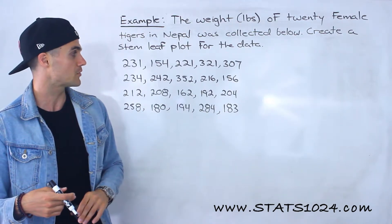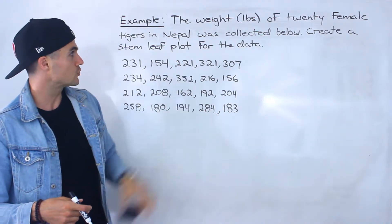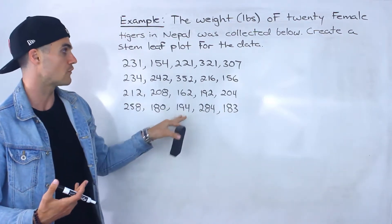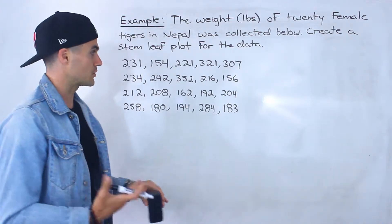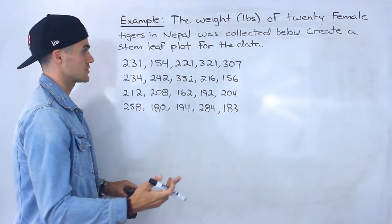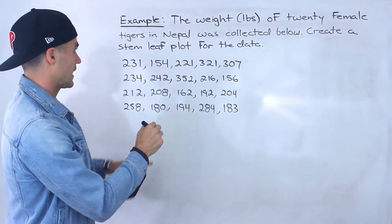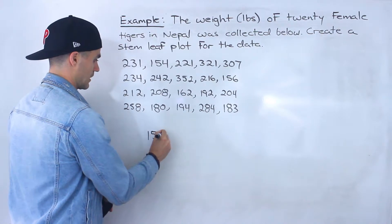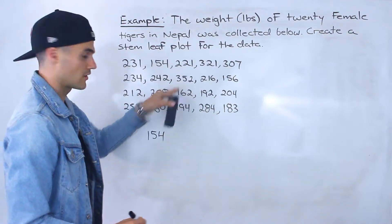What we have here is the weight in pounds of 20 female tigers in Nepal that was collected, and we have to create a stem-leaf plot for this data. The first thing I always like to look at is the smallest and largest observation. The smallest one is 154 pounds, and the largest weight is 352 pounds.